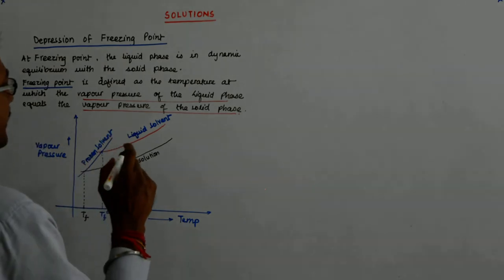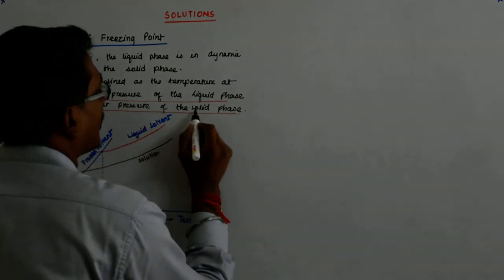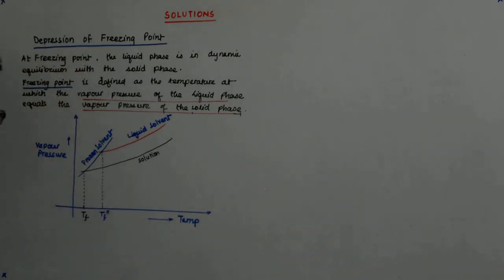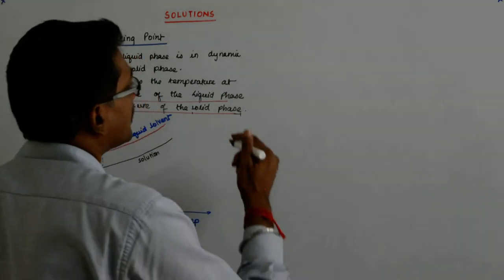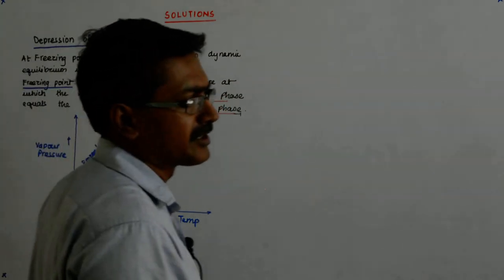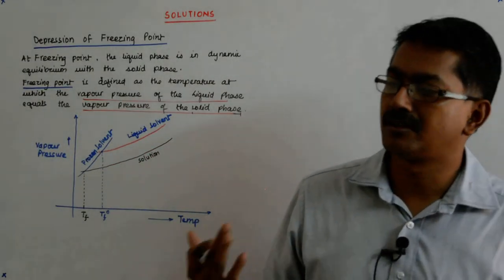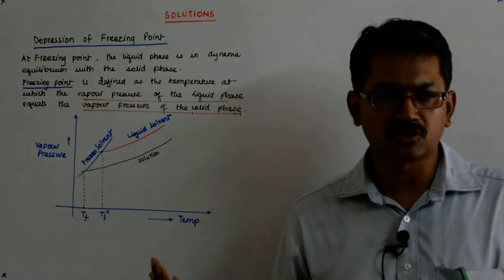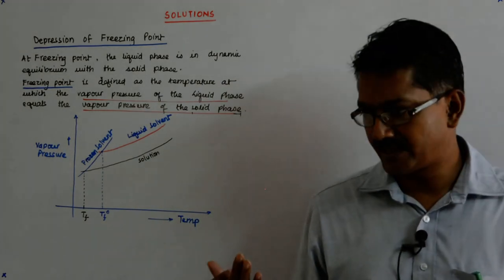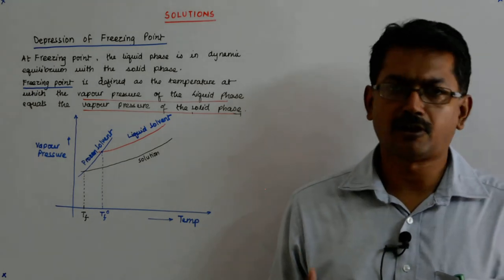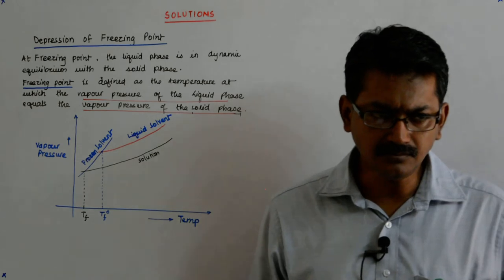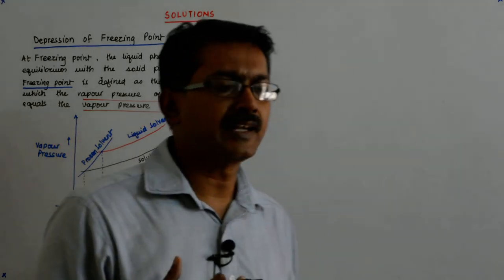And that's how it goes down. I'd like to tell one thing here. Vapor pressure of the solid phase is something that we are not able to digest. Let me tell you at this stage that there are certain solids which we call the subliming solids. They are the solids which directly change from the solid state to the gaseous state like camphor, like naphthalene balls, like ammonium chloride.